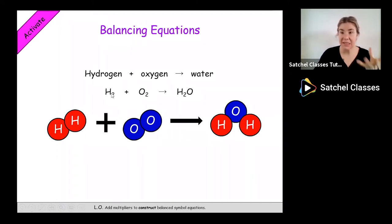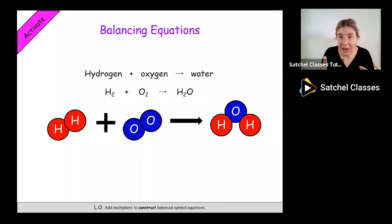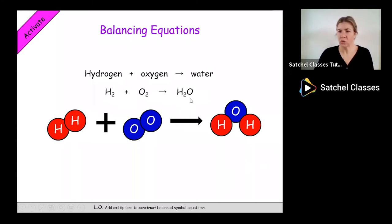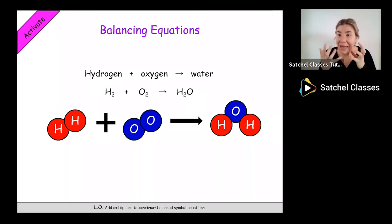You might think you can just put a little two on the water to make H2O2 - that is wrong. If I change the subscript number, it completely changes what it is. H2O2 is not water - that's hydrogen peroxide, that's bleach. Hydrogen plus oxygen doesn't make bleach in this reaction. Similarly, if you change the two in O2 to a three, that would be ozone - a completely different substance. So I can only change the big numbers, the multipliers in front.